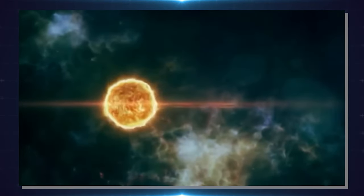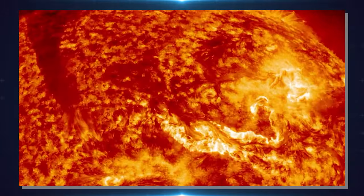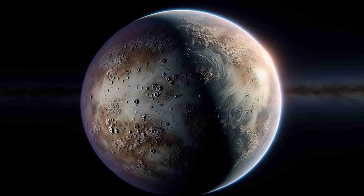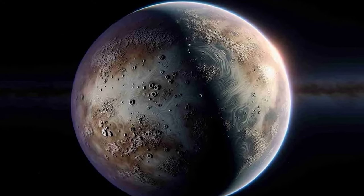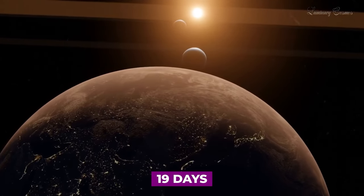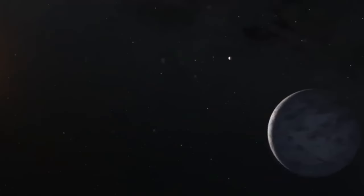TOI-715b is what we call a typical red dwarf star. Compared to our sun, it's much smaller, about one-fourth of the sun's mass and size. One of its planets, TOI-715b, orbits very close to the star, completing a full orbit in just 19 days. This proximity places TOI-715b in what scientists call the conservative habitable zone of the star.